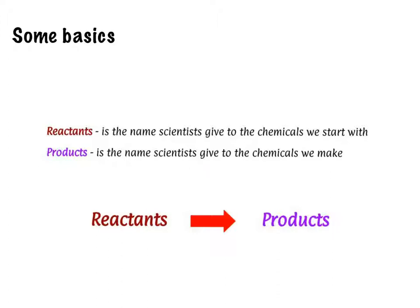We saw how energy has a law that says the energy we start with and the energy we end up with are equal — the law of conservation of energy. There is a similar law called the law of conservation of mass, which means the mass of what we start off with equals the mass of what we end up with. Mass is really a measure of the number of particles or atoms, so the number of particles we start with and finish with must be the same.